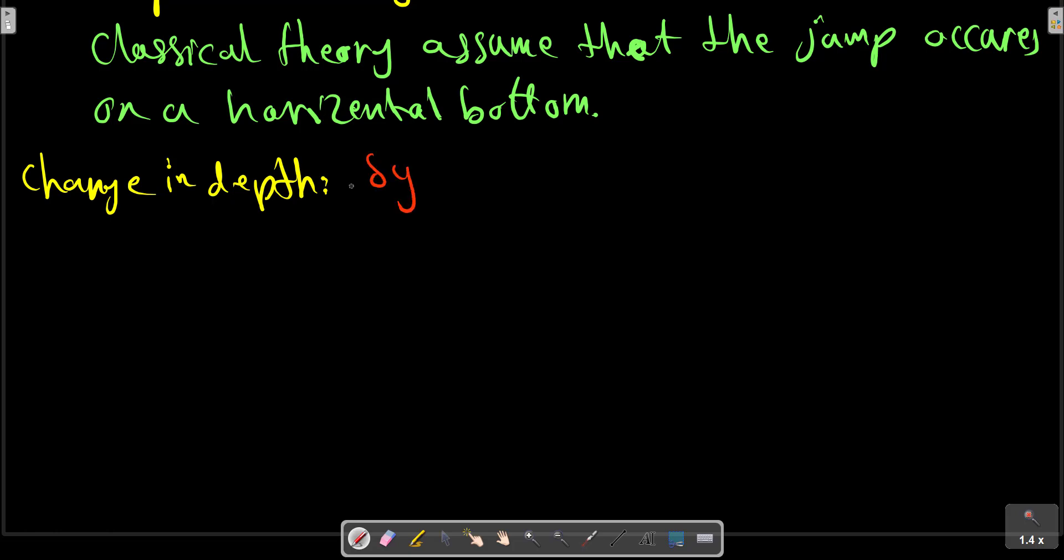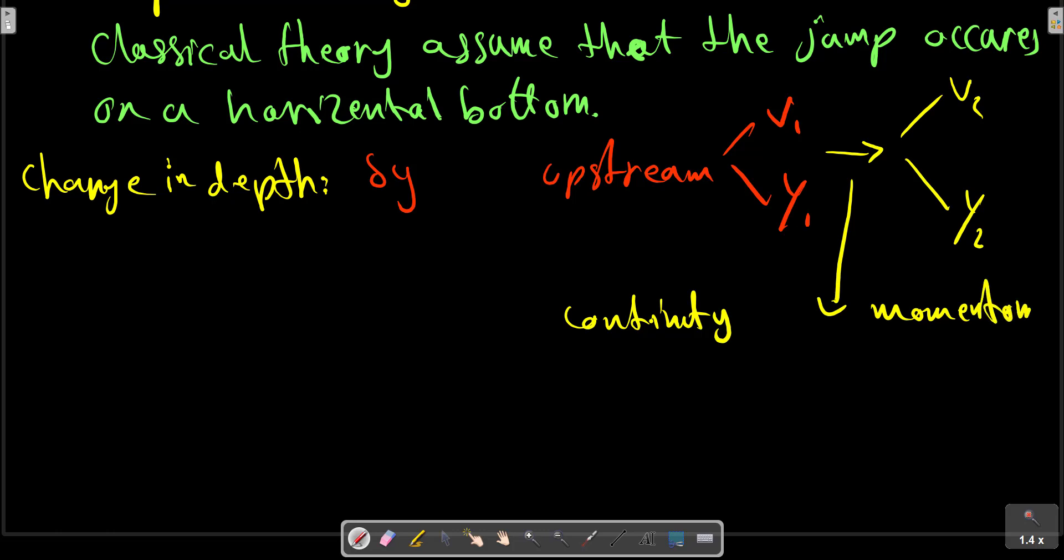If v1 and y1 upstream are known, the downstream conditions v2 and y2 can be calculated by applying continuity and momentum relations across the wave.